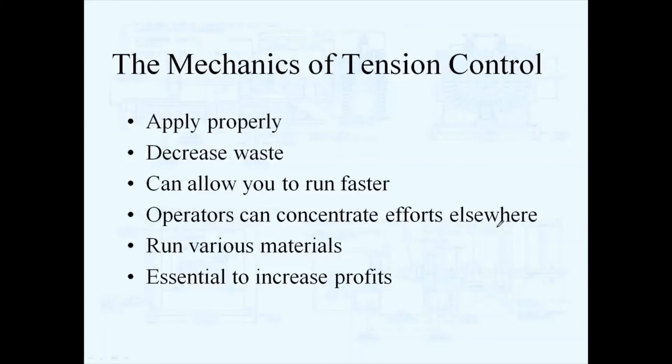Basically, if you have a tension control properly designed for your application, you can decrease waste in your machine. They can also allow your machines to run faster if you have controls properly positioned in your process and properly designed. Also adding automatic controls where you have manual controls now can allow your machine operators to concentrate their efforts somewhere else on the machine. If you have your tension controls in your machine, they should be designed to run all the types of materials in your process. Really, proper tension control today in converting is essential to increasing your profits and benefits in your process.